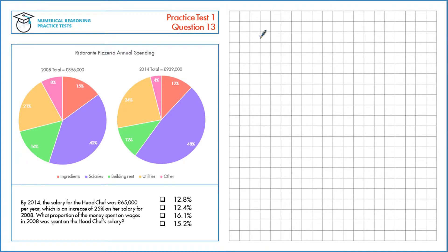By 2014 the salary for the head chef was £65,000 per year, which is an increase of 25% on her salary for 2008. What proportion of the money spent on wages in 2008 was spent on the head chef's salary?